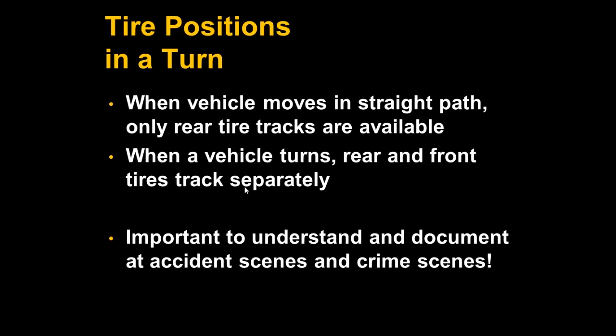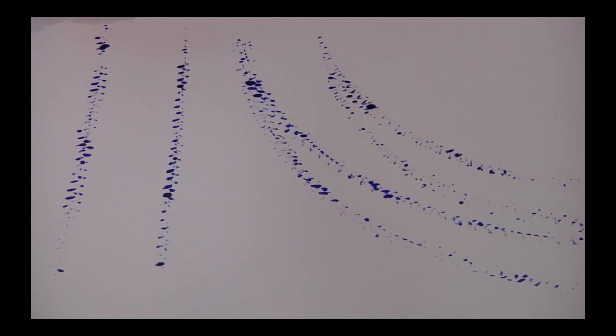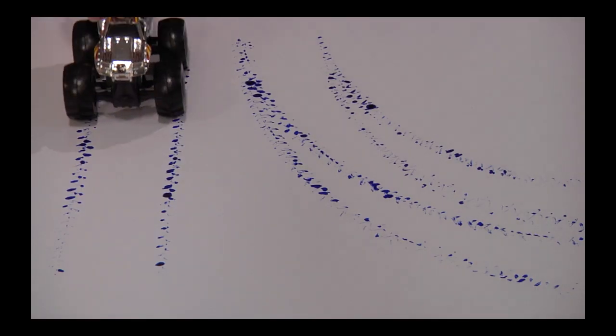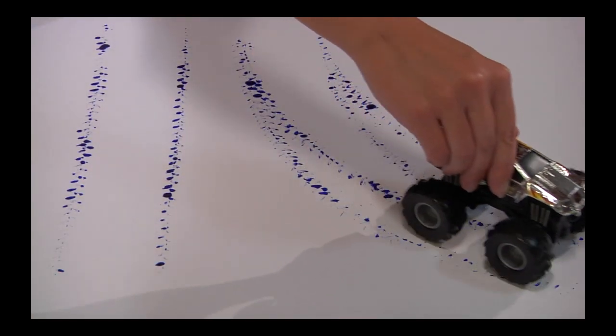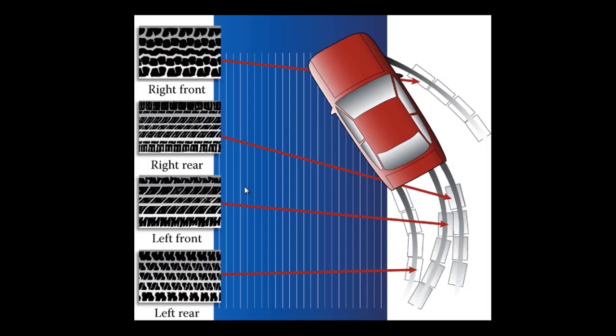The last important thing to document from tire track evidence is tire positions. Tire positions can only be documented for turning vehicles because that's when you'll see all four tire tracks. When a vehicle moves in a straight path, only the rear tire tracks are available. When a vehicle turns, the rear and front tires track separately. Here is another image of tire positions from a turning vehicle — you can clearly see that all four tire tracks are visible. It's really important to document this and understand how tire tracks are made and which tires are represented by specific tire tracks.